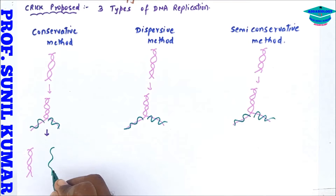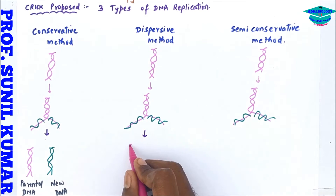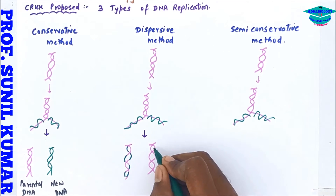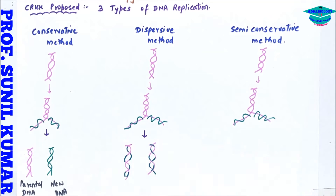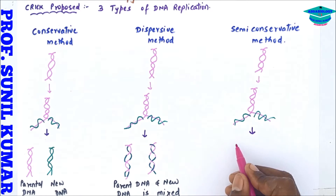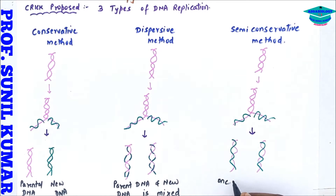In the conservative method, the parental DNA remains preserved as it is and new daughter DNA is formed. In the dispersive method, the parental DNA and the daughter DNA both get mixed with each other, resulting in a totally new type of DNA. In the semi-conservative method, one strand remains the parental strand and the other is the newly synthesized daughter strand.